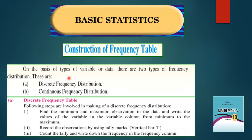Construction of a frequency table on the basis of types of variable or data. There are two types of frequency distribution. The first one is discrete frequency distribution. The following steps are involved: first, find the minimum and maximum observation in the data and write the values of the variable in the variable column from minimum to maximum. Second, record observations by using tally marks — vertical bars. Count the tally and write down the frequency in the frequency column.